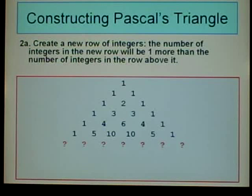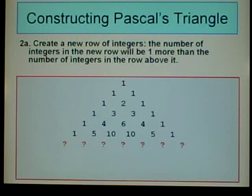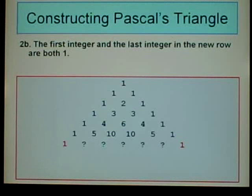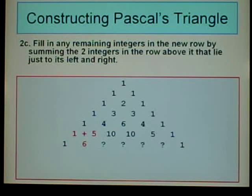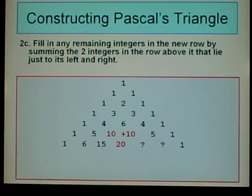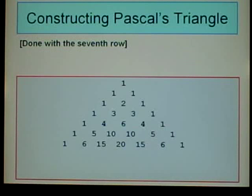We're going to add another row. The last row had 6 integers, so this row will have 7 integers. The first and last are 1. For the remaining unknowns: 1 plus 5 equals 6; 5 plus 10 equals 15; 10 plus 10 equals 20; 10 plus 5 equals 15; 5 plus 1 equals 6. And we're done with the seventh row.